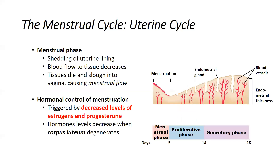Let's start with the first phase of the uterine cycle: the menstrual phase. This is the shedding of the lining of the uterus. Blood flow decreases, capillaries are dying and decreasing in density, glands secreting mucus decrease, and tissue is dying and being sloughed off. This happens on day 1 of the menstrual cycle, and by about day 5 the bleeding and shedding should be done.